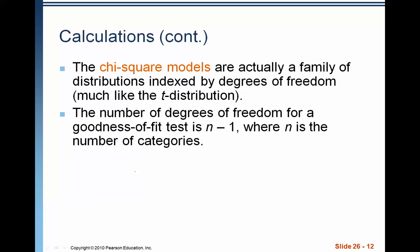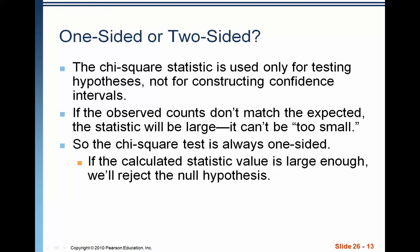The chi-square models are a family of models, like the t-distribution. It is dependent on the degrees of freedom. The degrees of freedom for this test is n minus 1, where n is the number of categories. Notice that it is not the sample size. It is the number of categories. Finally, the chi-square statistic is used only for testing hypotheses. It is not for constructing confidence intervals. We'll take a look at the chi-square model later, but it is not a normal model. It is actually a skewed model, skewed to the right. And because it's not symmetric, we do not construct confidence intervals. If the observed counts don't match the expected statistic, it can't be too small. So the chi-square test is always one-sided. If the calculated statistic value is large enough, we reject the null hypothesis.